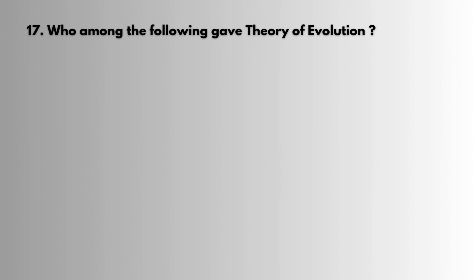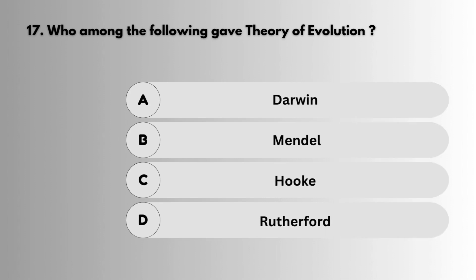Question 17: Who among the following gave the theory of evolution? Answer: Darwin.